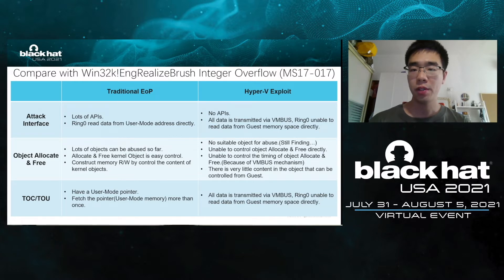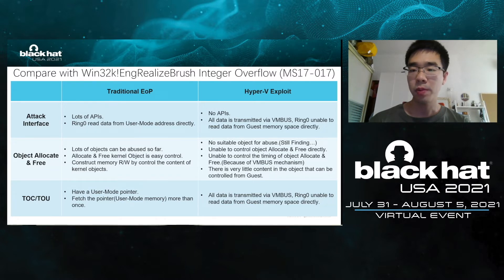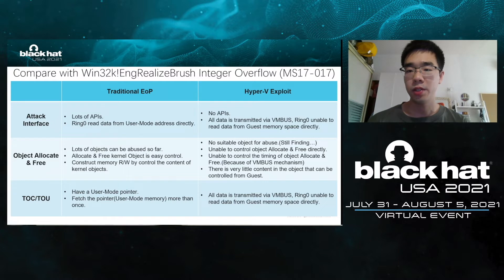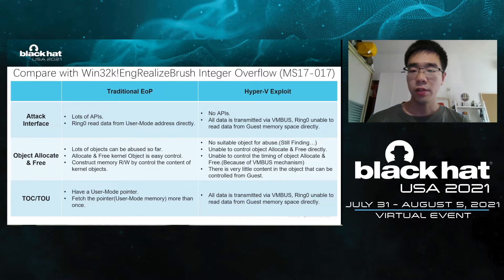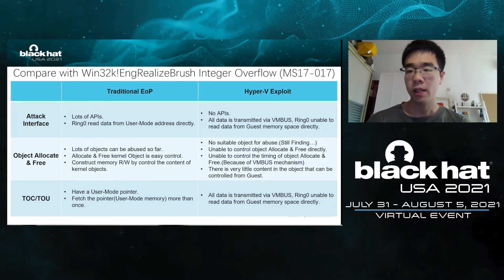About attack interface: traditional EOP has lots of APIs, and Ring0 is able to read data from user mode address directly. But Hyper-V has no APIs and all data is transmitted via VMBus. Ring0 is enabled to read data from guest memory space directly. About object allocation and free: traditional EOP exploits have lots of objects that can be abused. A allocated and freed kernel object is easy to control — you can construct memory read and write by controlling the content of kernel objects. Hyper-V exploits have no suitable object for abuse, and you cannot control the timing of object allocation and free. Because of the VMBus mechanism, there is very little content in the object that can be controlled from the guest.